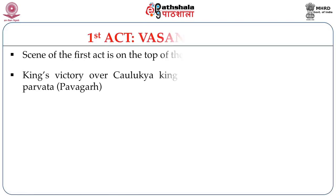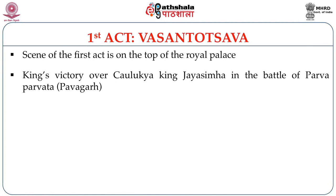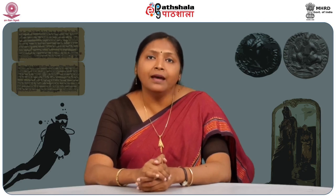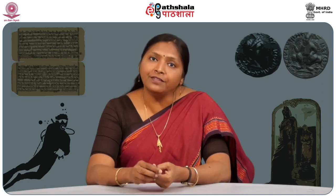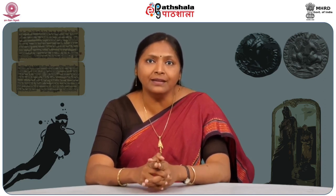The female characters speak in Prakrit and the elite male characters speak in Sanskrit. There are 82 lines consisting of two acts. The first act is named Vasanthatsava and the second act is called Tadankadarpad. The first act name is in Sanskrit whereas Tadankadarpad is a Prakrit appellation.